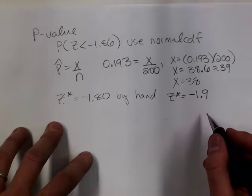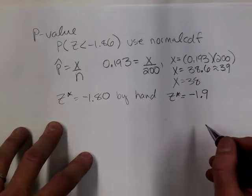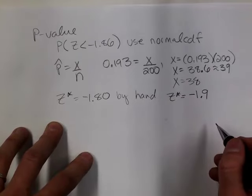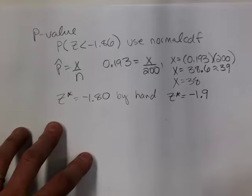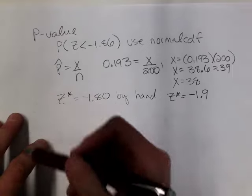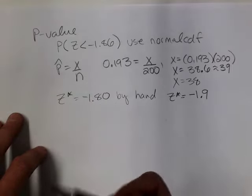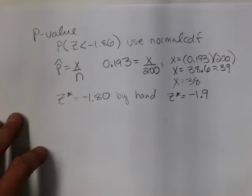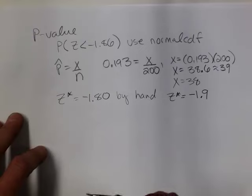Since we rejected the null, it is possible that a type 1 error may have occurred — it doesn't mean that it did, just that it's a possibility. Remember, you can't get a type 1 and a type 2 error at the same time because you can't reject and fail to reject the null simultaneously.